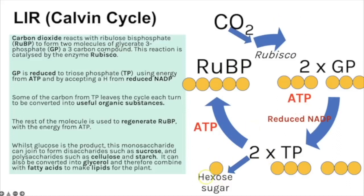That is just one round of the cycle, which only creates one carbon — not enough for a hexose sugar. Hexose means six, so the Calvin cycle must happen six times before a hexose sugar is made. That could be glucose or sucrose, and the plant can convert it into whatever organic compound is needed.